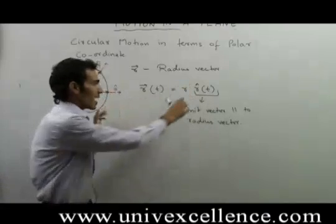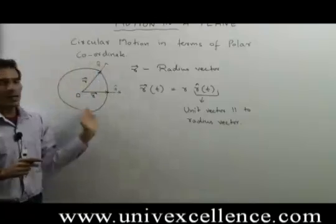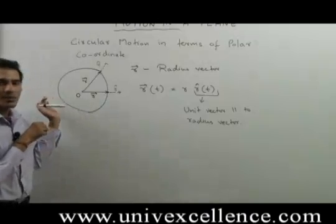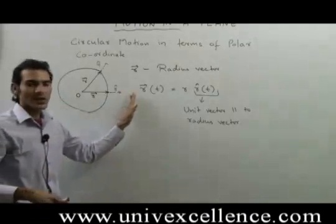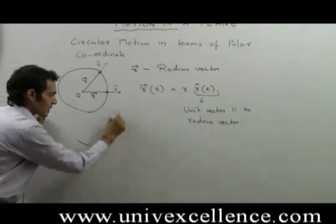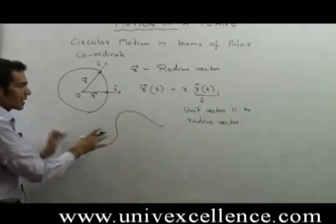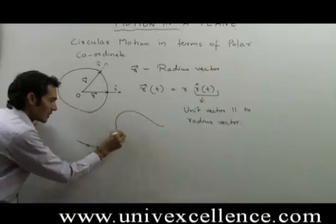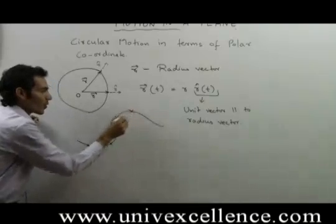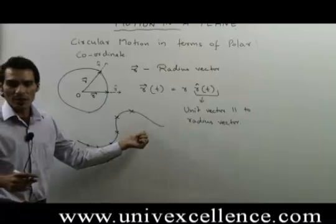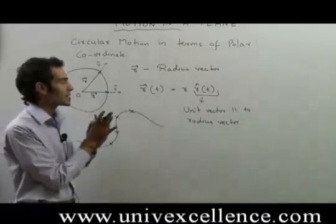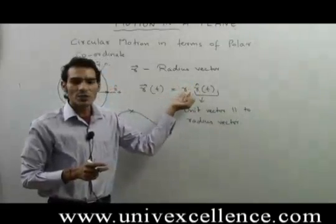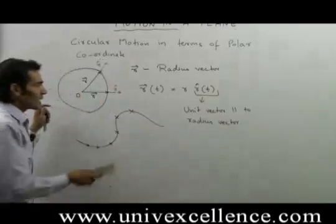If r is constant, the particle is moving in a circle. If r is also changing, the particle is moving along some curve whose radius of curvature is changing. At each instant the motion can be described as circular, but overall this is not circular motion. For circular motion, the magnitude of the radius vector r must be constant.